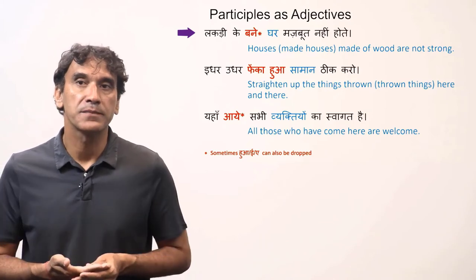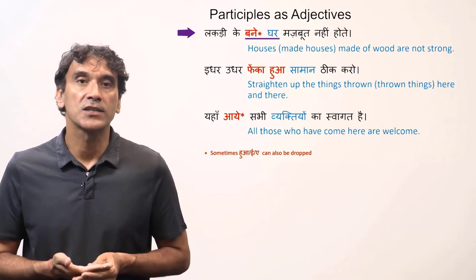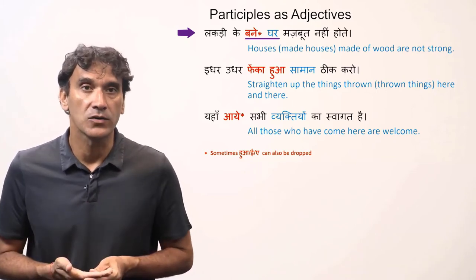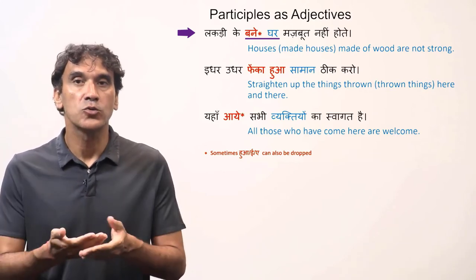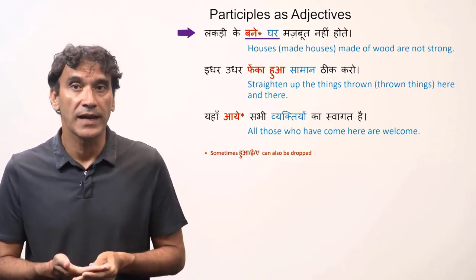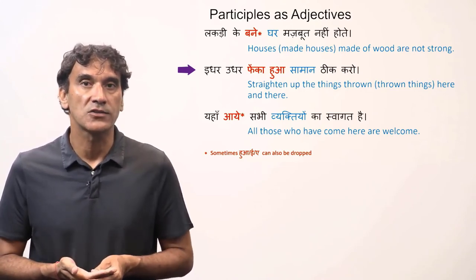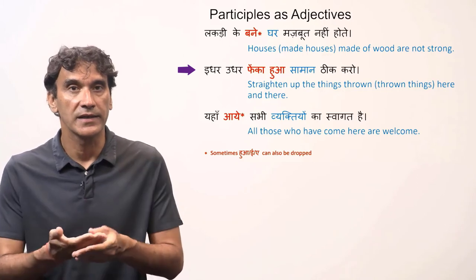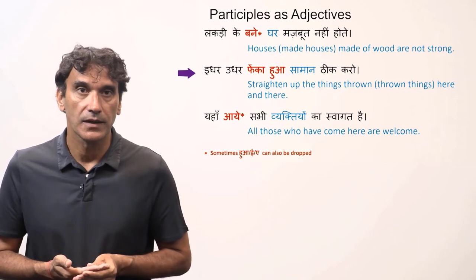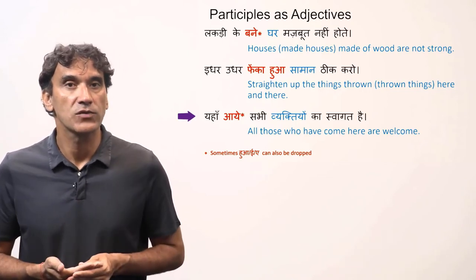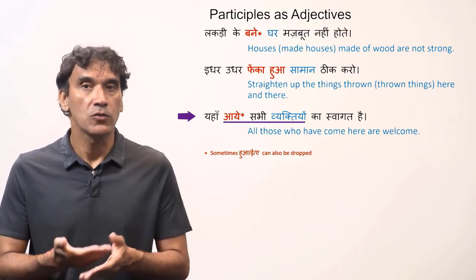'Lakdi ke bane ghar mazboot nahi hoti' means 'houses made of wood are not strong'. The literal translation of 'bane ghar' is 'made houses', so 'lakdi ke bane ghar' means 'wood-made houses'. Sometimes 'hua', 'hui', or 'hue' can also be dropped, as 'hua' is dropped here. 'Idhar udhar pheka hua saman theek karo' means 'straighten up the things thrown here and there', where 'pheka hua saman' literally means 'thrown things'. 'Yahaan aaye sabhi vyaktiyon ka swagat hai' means 'those who have come here are welcome', where 'aaye vyakti' refers to 'people who have come'.